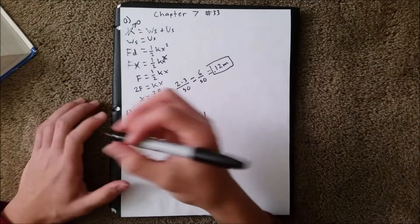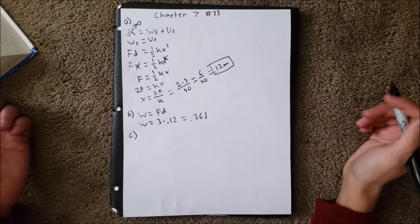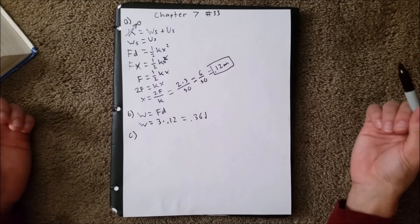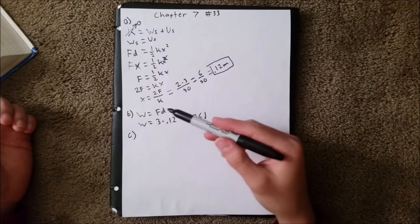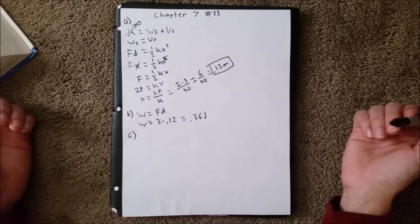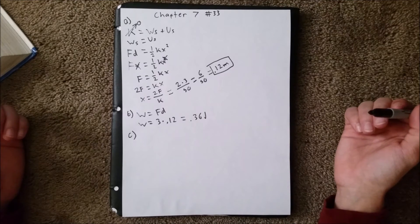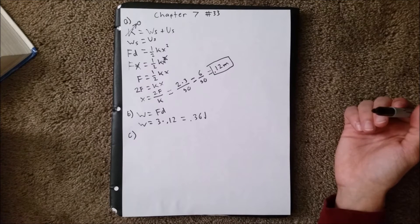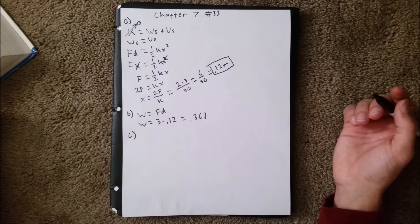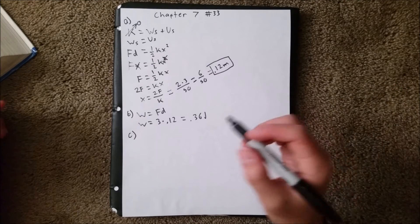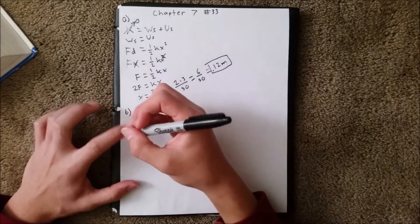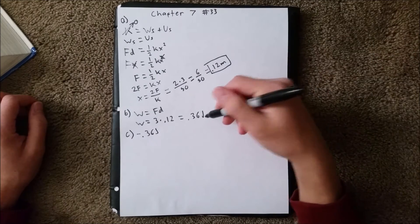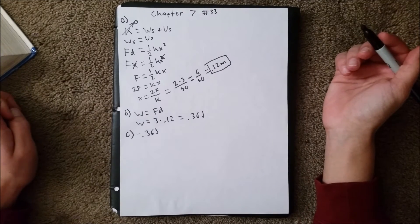For part C, it asks the work that has been done on the block by the spring force. If the force here is 3, and the work done is pointing in the positive direction, since it's asking for the spring force, which is in the opposite direction, it is going to be equal but opposite to the force by the block. In this situation, it is going to be negative 0.36 joules, just the negative of the blocks.